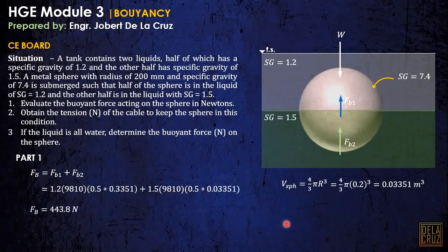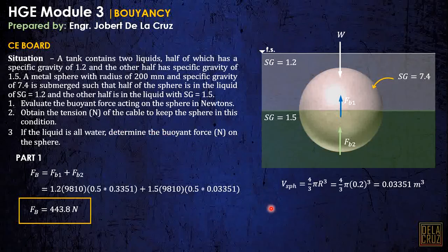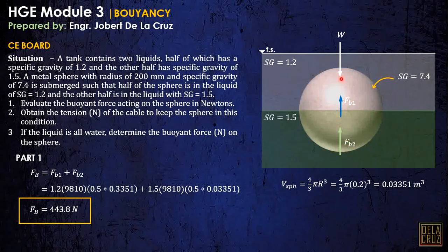This gives us the total buoyant force. For number 2, obtain the tension in newtons of the cable needed to keep the sphere in this condition. We should determine where to apply the tension. Since the sphere is very heavy, without a cable it would sink all the way to the bottom of the liquid. So the tension must be applied from above.